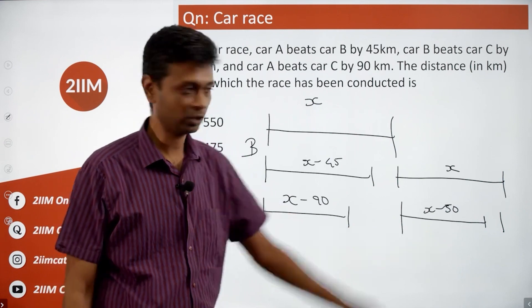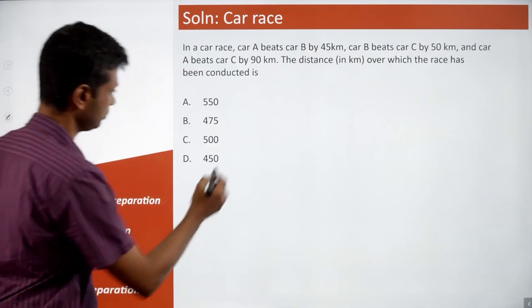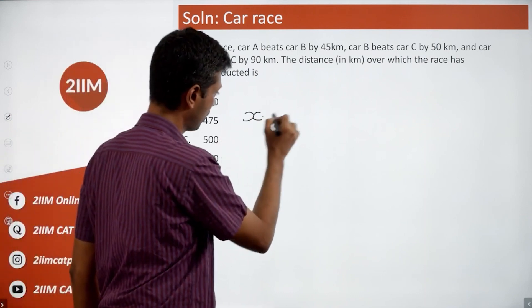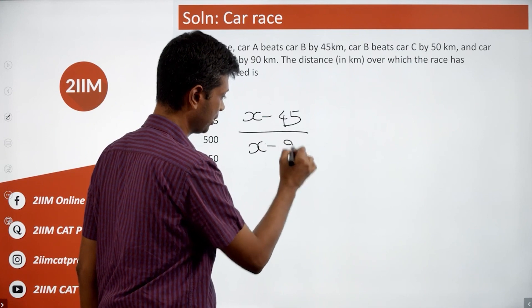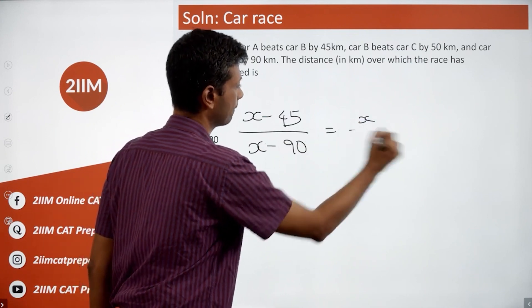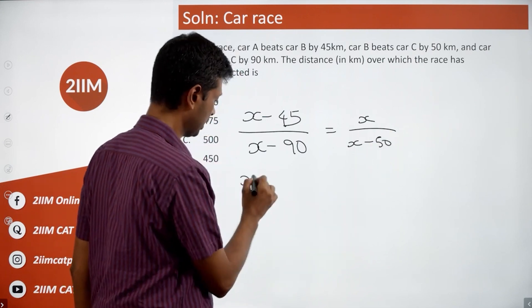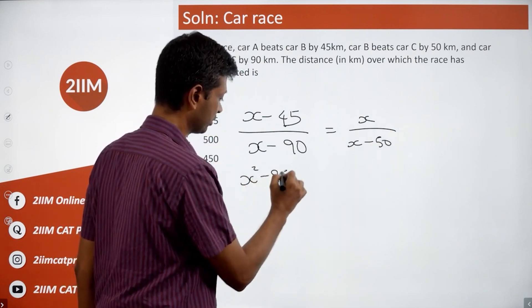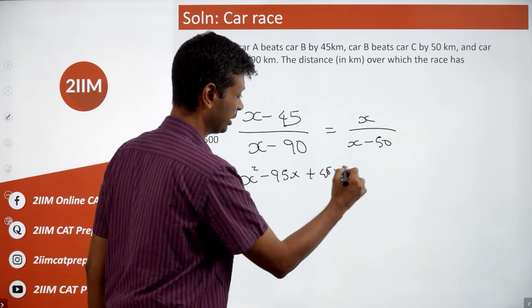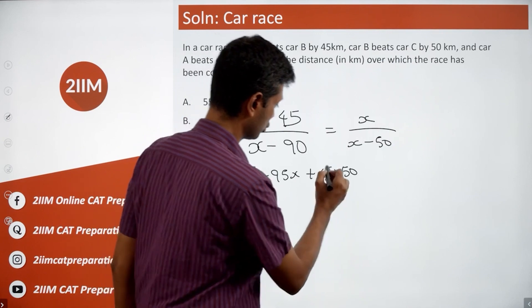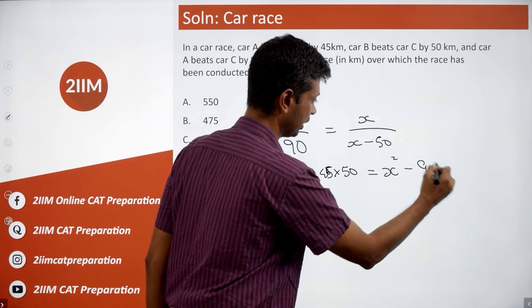Cross multiply, simplify. X minus 45 by X minus 90 is equal to X by X minus 50. Cross multiply will have X squared minus 95X plus 45 into 50. You don't want to multiply this, this is equal to X squared minus 90X.